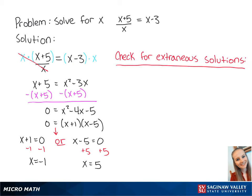Now we have to check for extraneous solutions. For a rational equation like this one, an extraneous solution is when the denominator is equal to 0. Since neither of our solutions are equal to 0, x equals negative 1 and x equals 5 are both solutions to our problem.